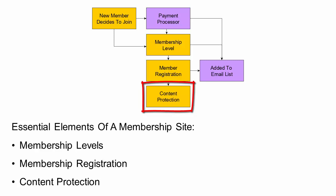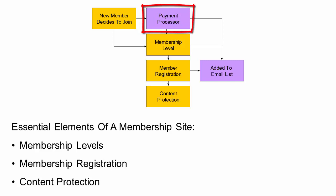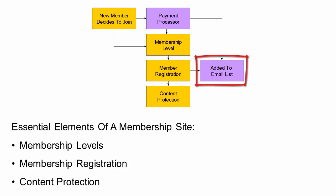Content protection is the essential element that makes a membership site different from all other types of websites. If you want to sell access to your content, you may also want to add a payment processor to the setup. And if you plan to build a list of members that you can contact with updates and upsells, you should also add an email capture form. But these are all additional features.